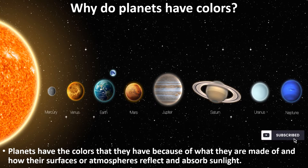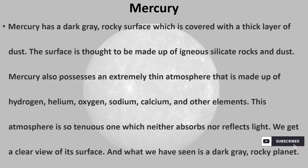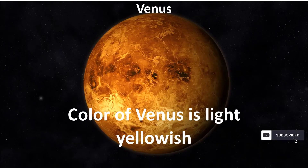The color of Mercury is gray. Mercury has a dark gray rocky surface which is covered with a thick layer of dust. The surface is thought to be made up of igneous silicate rocks and dust. Mercury also possesses an extremely thin atmosphere made up of hydrogen, helium, oxygen, sodium, calcium, and other elements. This atmosphere is so tenuous it neither absorbs nor reflects light, giving us a clear view of its dark gray rocky surface.